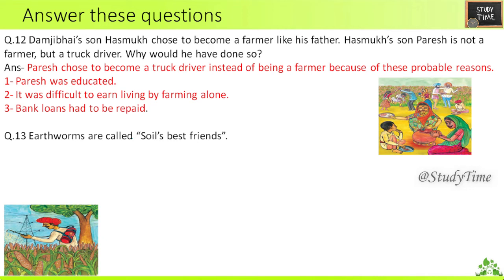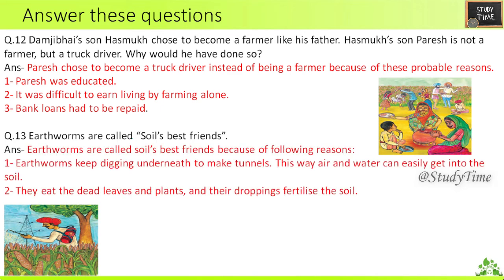Thirteenth question — why are earthworms called soil's best friends? Earthworms are called soil's best friends because they keep digging underneath to make tunnels, allowing air and water to easily get into the soil. They also eat dead leaves and plants, and their droppings fertilize the soil. For these reasons, earthworms are called soil's best friends.